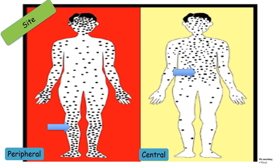Depending on the site, rash can either be peripheral or central. Peripheral rash is primarily seen in smallpox, which has now been eradicated. Central rash is classically seen in varicella. So smallpox is variola and chickenpox is varicella.